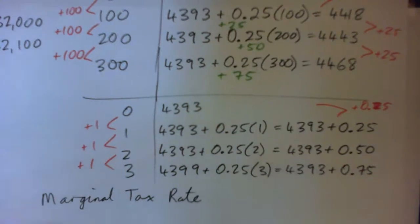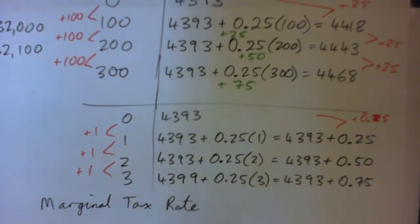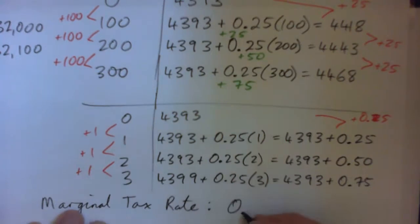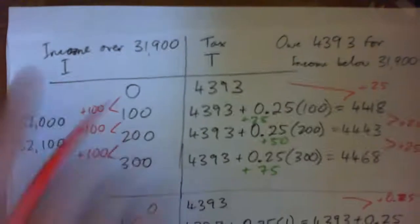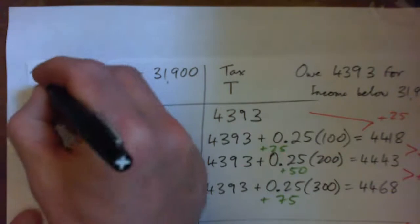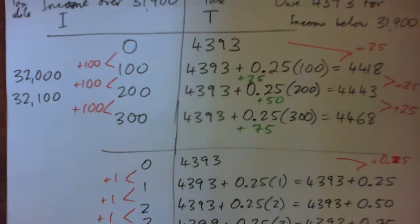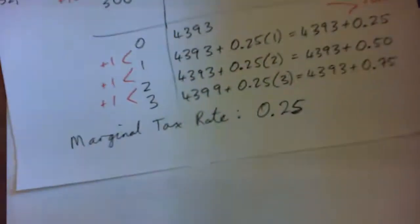When you earn over $31,900 and below $77,050, your marginal tax rate is 25 cents on the dollar. That's your tax rate in this particular bracket. And remember, this is not your income — it's taxable income, meaning you've already made your deductions.